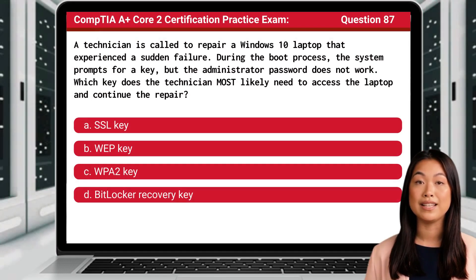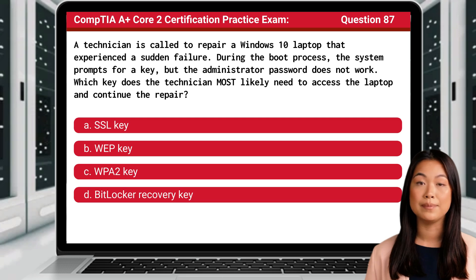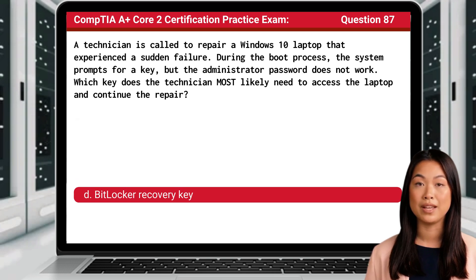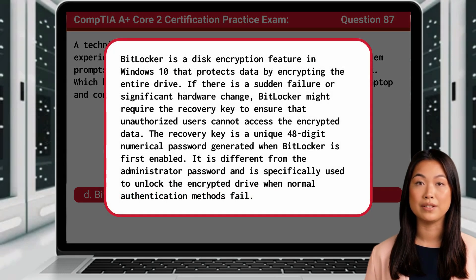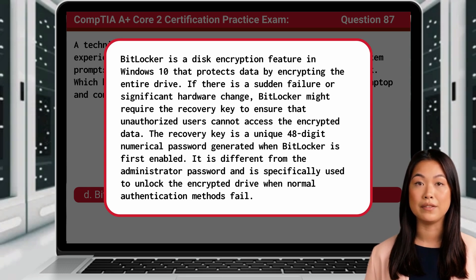Question 87: A technician is called to repair a Windows 10 laptop that experienced a sudden failure. During the boot process, the system prompts for a key, but the administrator password does not work. Which key does the technician most likely need to access the laptop and continue the repair? The answer is D, BitLocker recovery key. BitLocker is a disk encryption feature in Windows 10 that protects data by encrypting the entire drive. If there is a sudden failure or significant hardware change, BitLocker might require the recovery key to ensure that unauthorized users cannot access the encrypted data. The recovery key is a unique 48-digit numerical password generated when BitLocker is first enabled. It is different from the administrator password and is specifically used to unlock the encrypted drive when normal authentication methods fail.